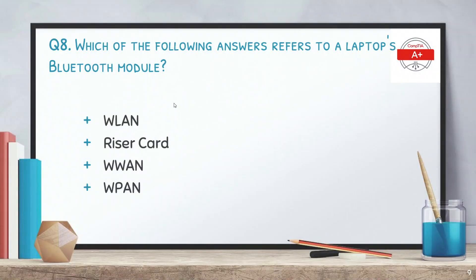The next question is: which of the following answers refers to a laptop's Bluetooth module? The options are WLAN, riser card, WVAN, and WPAN. The answer is WPAN, or the wireless personal area network.